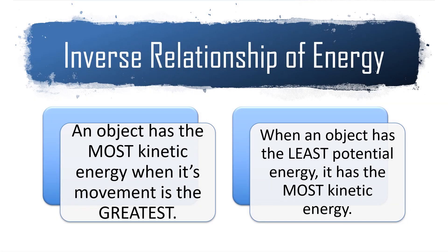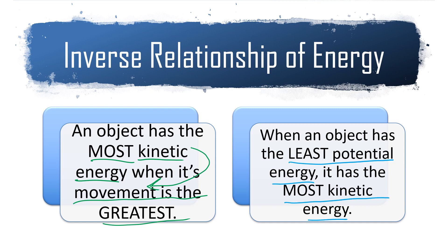There's an inverse relationship between potential and kinetic energy. An object has the most kinetic energy when its movement is the greatest. And when an object has the least potential energy, it has the most kinetic energy — so as one goes up, the other has to go down.